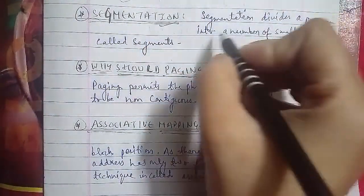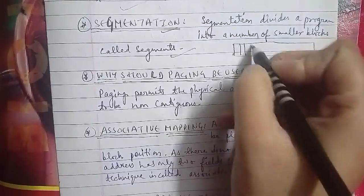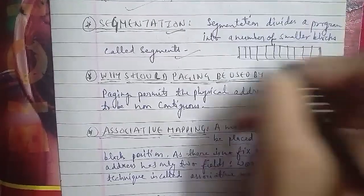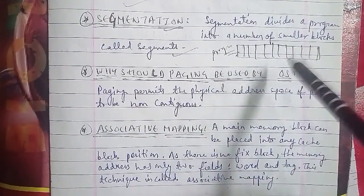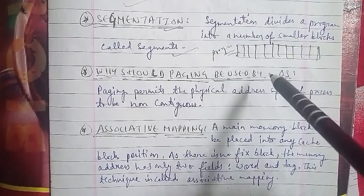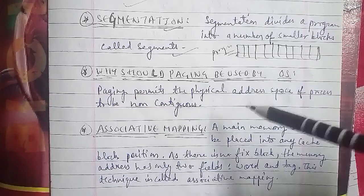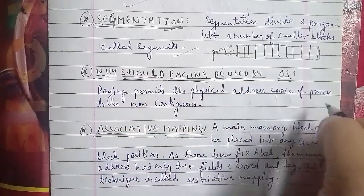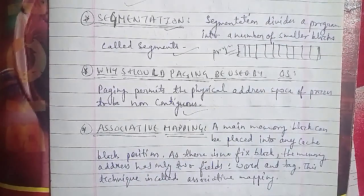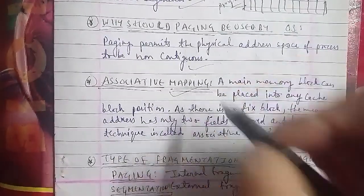Associative mapping: in associative mapping, a main memory block can be placed into any cache block position. The memory address has only two fields: word and tag. This technique is called associative mapping. When asked to define associative mapping, write that the main memory block can be placed into any cache block position, with no fixed block, and the memory address has two fields: word and tag.